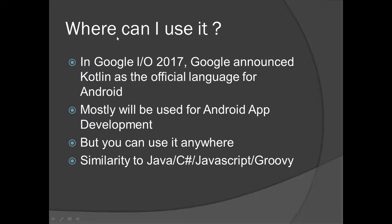At Google I/O 2017, Google announced Kotlin as the official language for Android. It means that you can write Android apps in the Kotlin language. Prior to Kotlin, we were using Java for writing Android apps. Still you can write Android apps in Java.